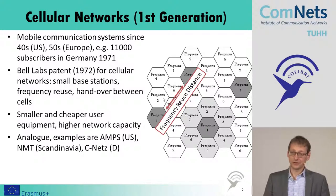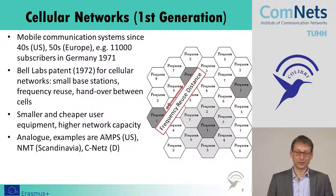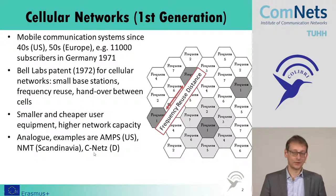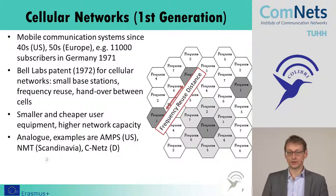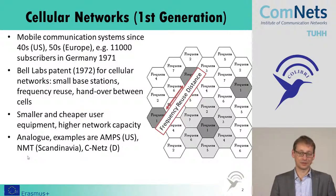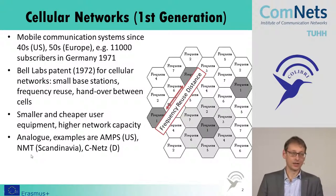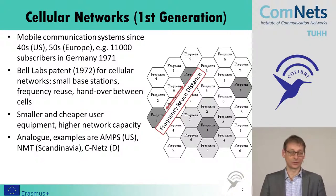The first systems available at that time were, for example, the Analog Mobile Phone System (AMPS) in the US, the C-Nets in Germany and Austria, and the most advanced was the Nordic Mobile Telephone (NMT) system in Scandinavia, which was already allowing roaming between countries like Denmark and Finland.